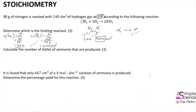The follow-on question asks us to calculate the number of moles of ammonia produced. The key is to use the ratio of the limiting reactant to the product. The limiting reactant is hydrogen, and the ratio of hydrogen to ammonia is 3 to 2. We have 6.25 moles of hydrogen available, so we divide by 3 and multiply by 2 to find that we would form a maximum of 4.17 moles of ammonia.